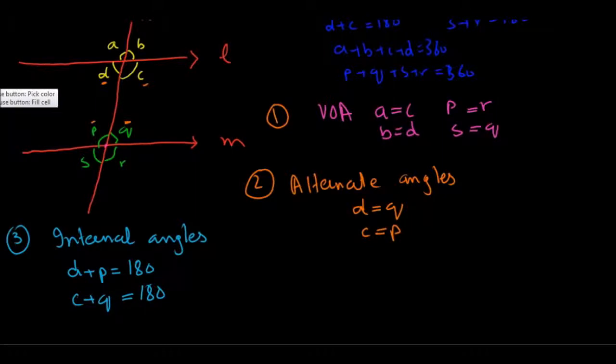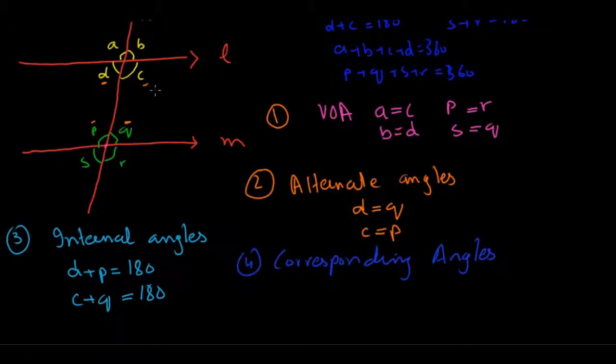Lastly, the last pair that we have is corresponding angles. This is slightly harder to pick and you don't always actually need to be able to pick these angles out. So these are like angle A and angle P. These are corresponding angles and they are equal to each other.